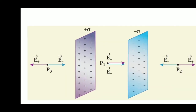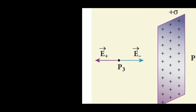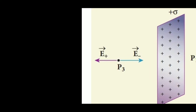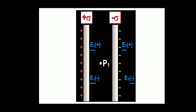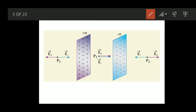So far we studied one sheet only. The expression for electric field due to this positively charged sheet is E equal to sigma by 2 epsilon naught. Now instead of one sheet, today we will have two sheets: one is positively charged, another one is negatively charged. The surface charge density of the positively charged plate is plus sigma, and the negatively charged plate is minus sigma. We divide this arrangement into three regions: region 1 is point P1, region 2 is point P2, region 3 is point P3. We want to find the expression for electric field at each of these points.